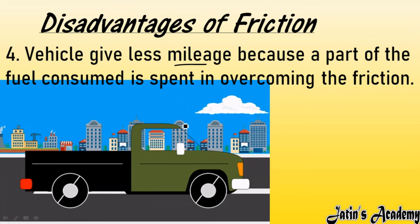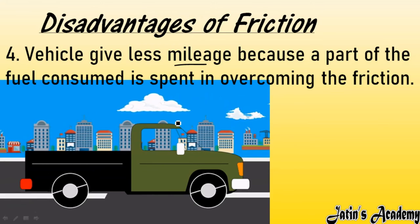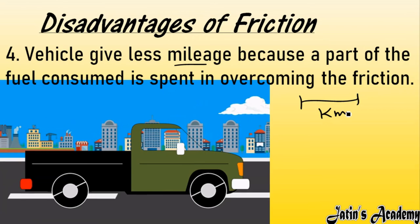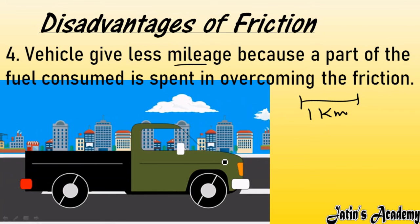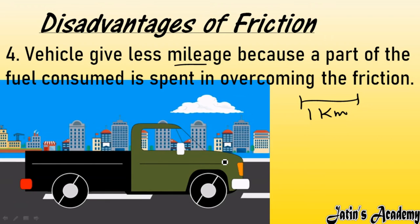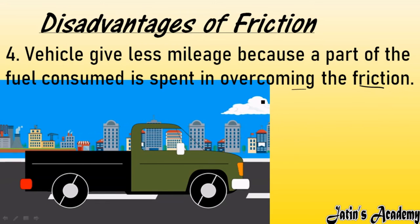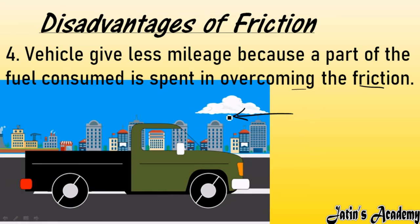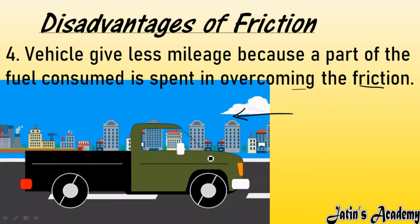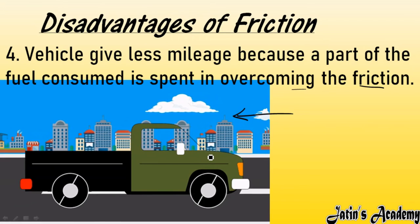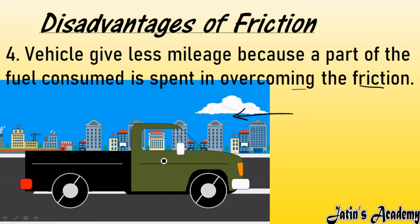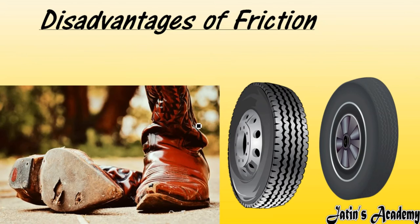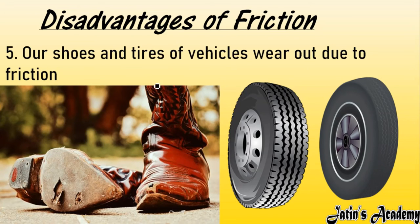Fourth disadvantage: vehicles give less mileage due to friction. Mileage means how much fuel a vehicle consumes per kilometer. When a car is moving, air also provides a frictional resistance that slows the vehicle, so the car must use more and more fuel to overcome this friction — resulting in reduced mileage.